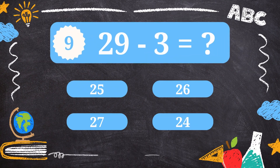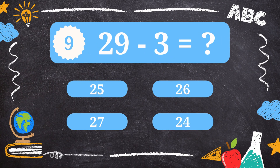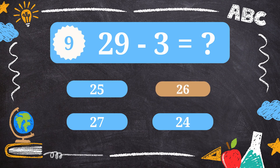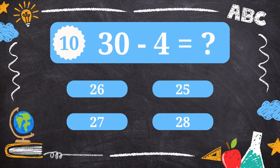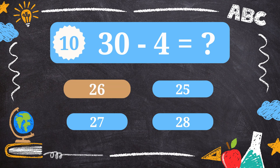Question 9. What is 29 minus 3? 26. Question 10. What is 30 minus 4? 26.